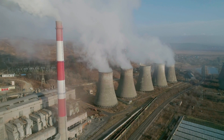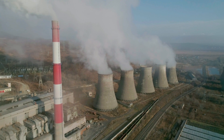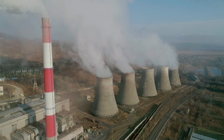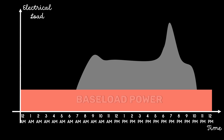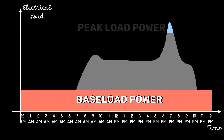Power plants generate electricity to meet these demands. If you look at this curve, this is the minimum amount of electricity required throughout the day. This power is referred to as base load power. Peak load power refers to electricity use at its highest points during the day.